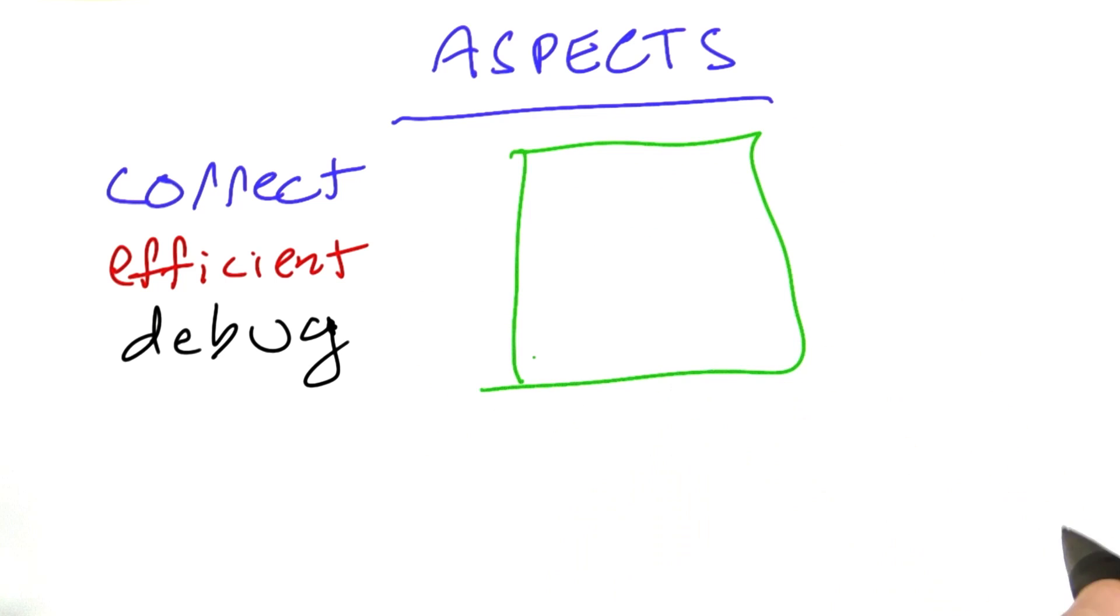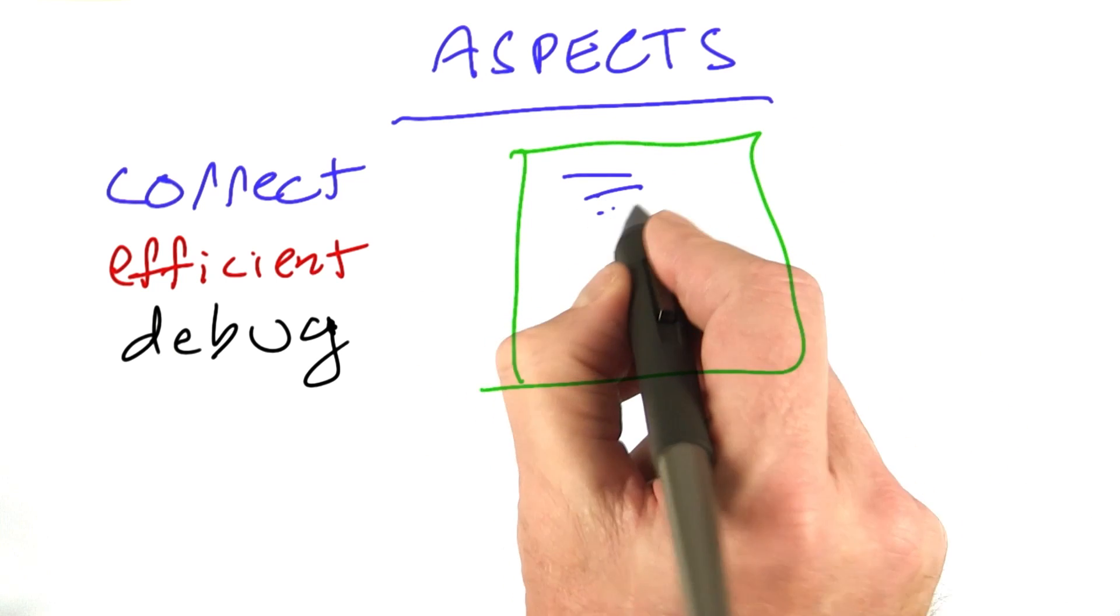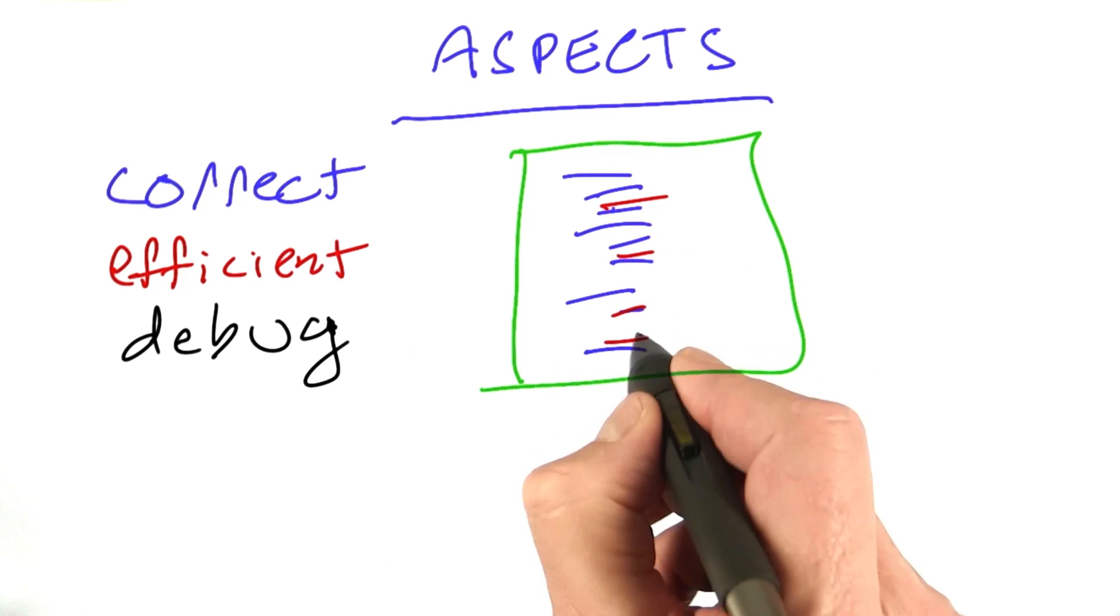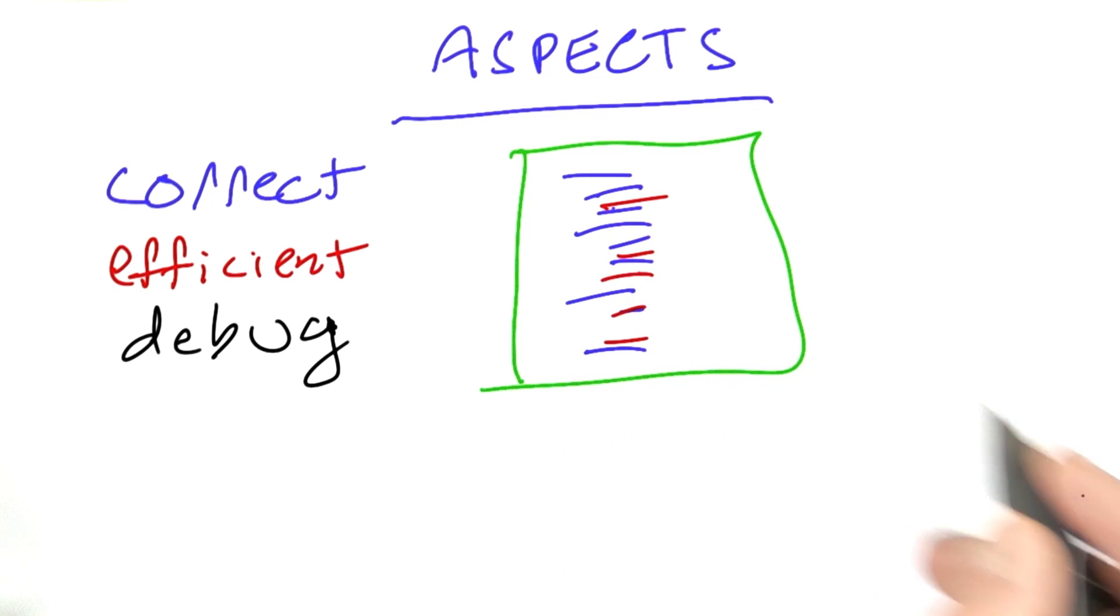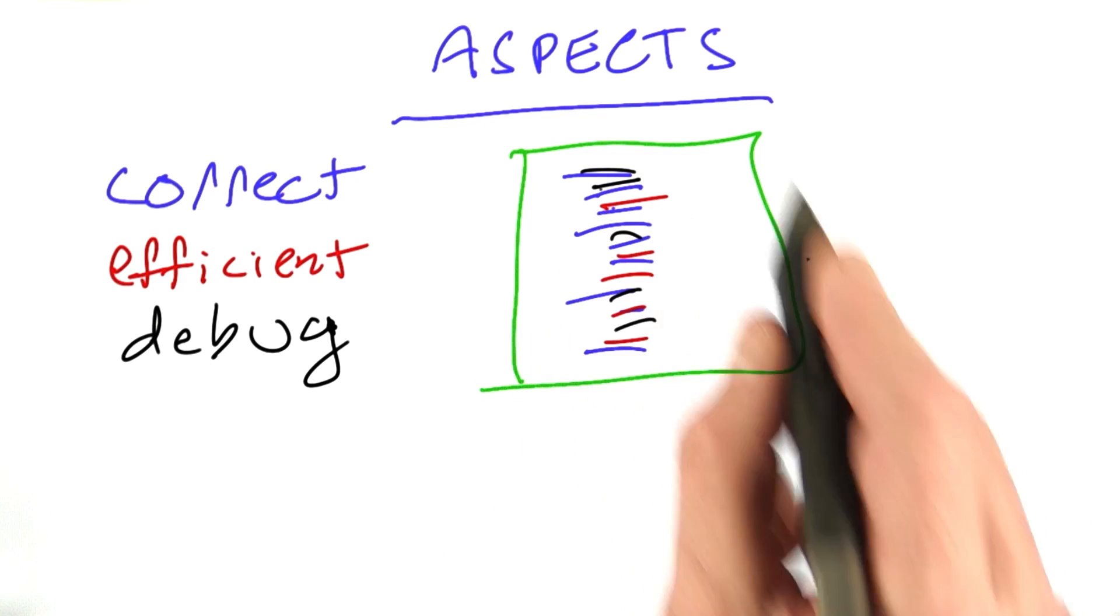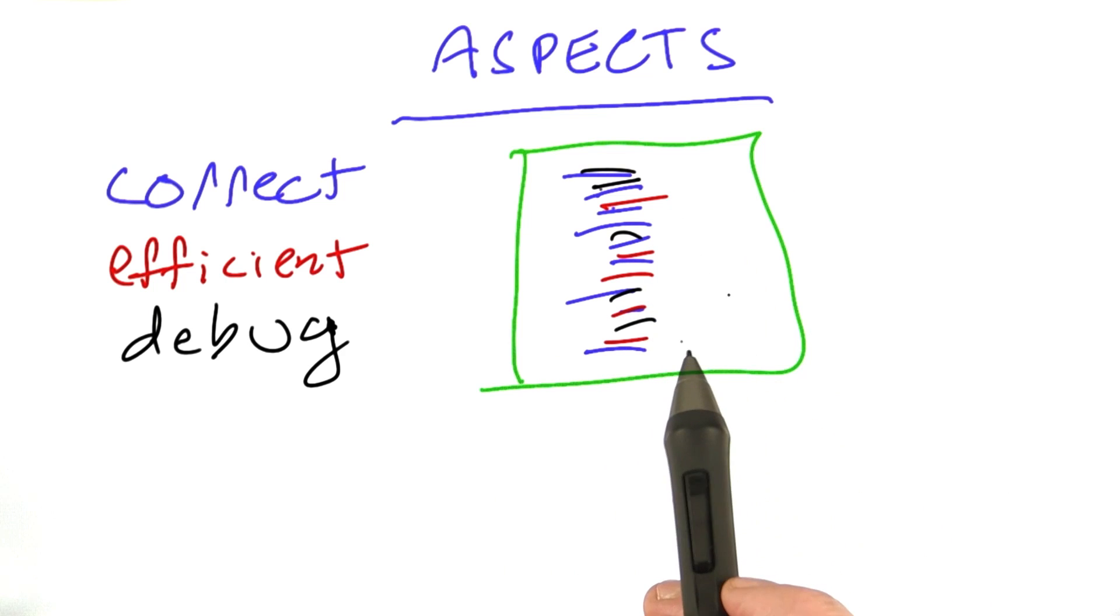Traditionally, we write our program. Some of what we've written has to deal with having it be correct, and then some of the code interspersed in there deals with efficiency, and now we've talked about adding further code that deals with debugging it. We end up with this mess that's all interleaved.